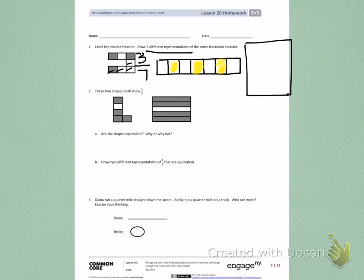Number 2. These two shapes both show 4 fifths. So, this first shape has 4 parts shaded and 5 parts total. The second shape has 4 parts shaded and 5 parts total.